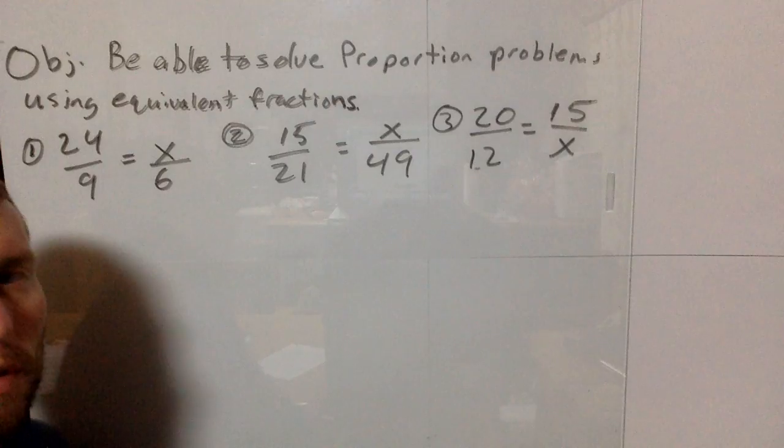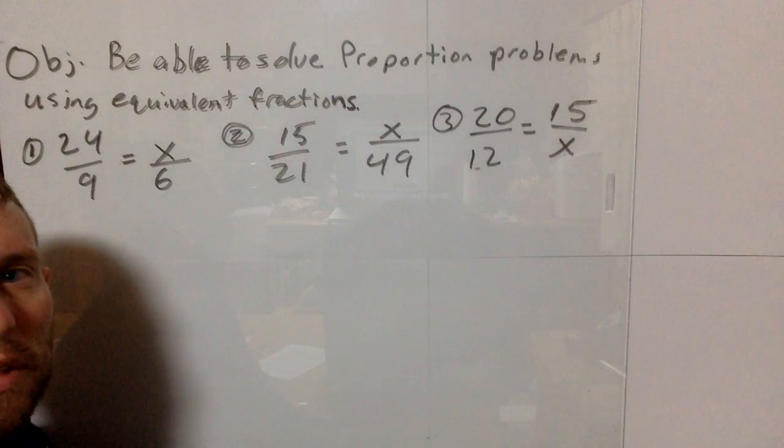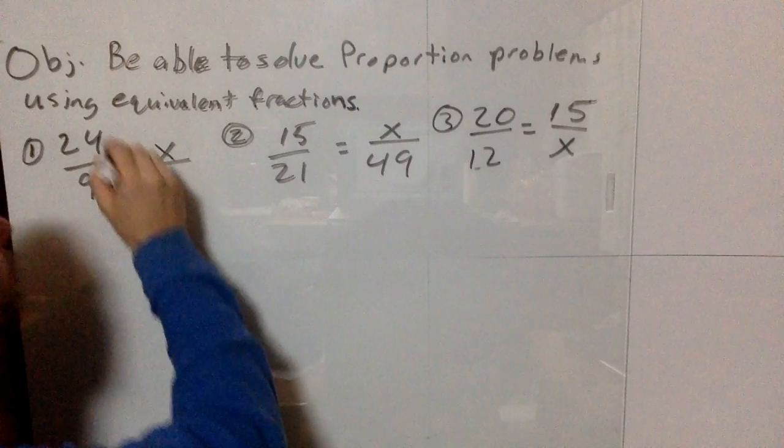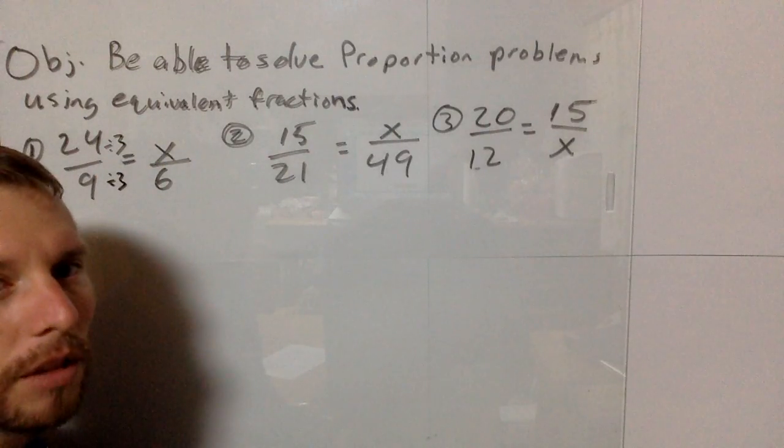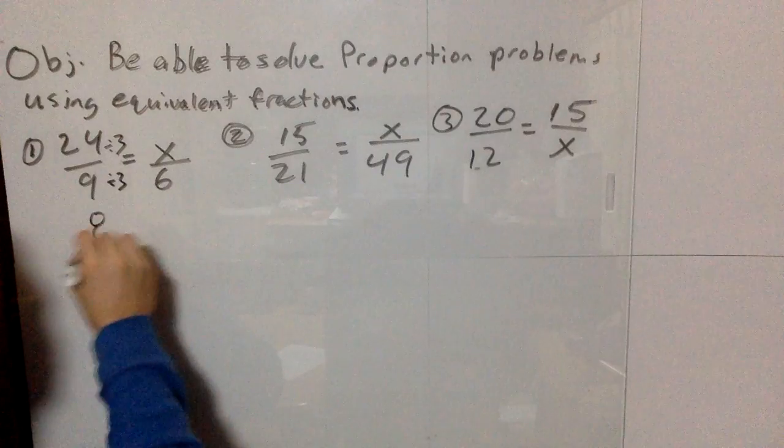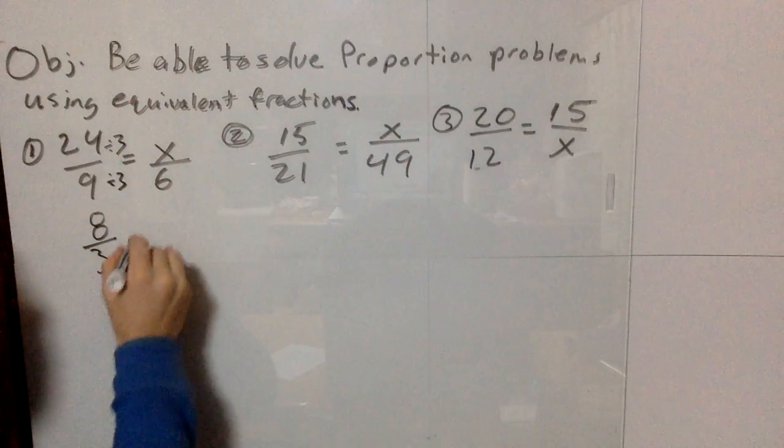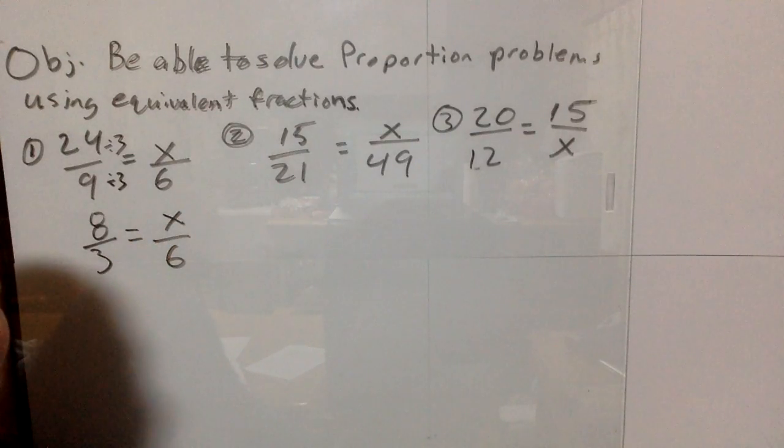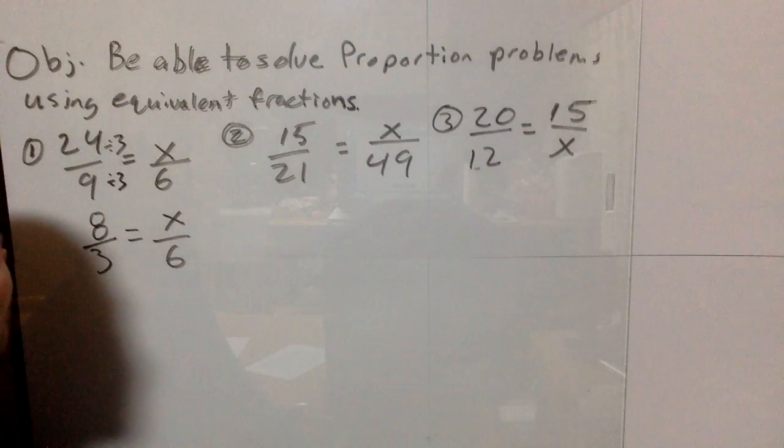For 24 over 9, the greatest common factor is 3. If we divide the top and bottom by 3, we get 8 over 3, which equals x over 6. Once we do this, we can solve it one of two ways.